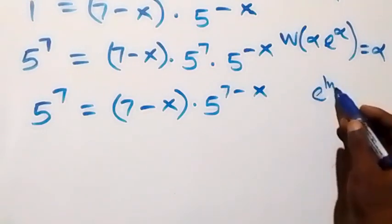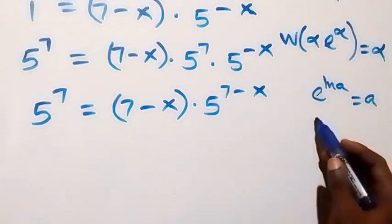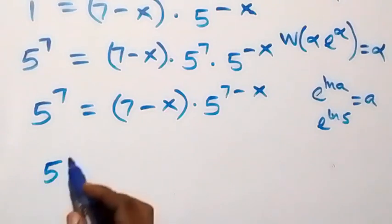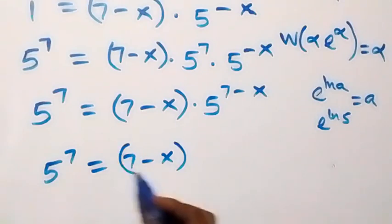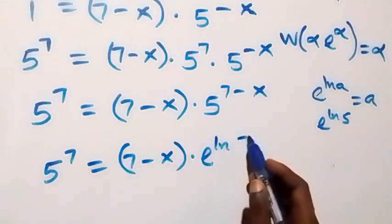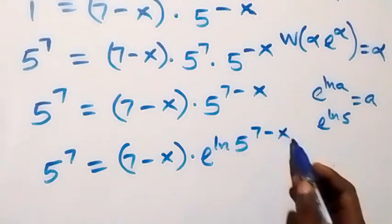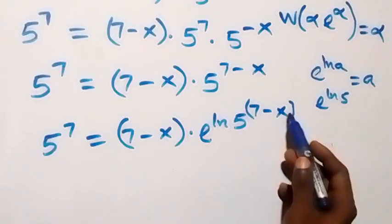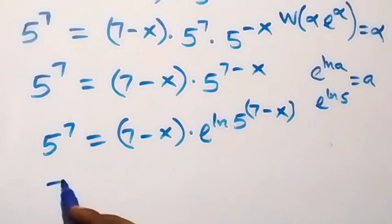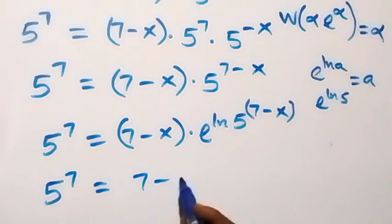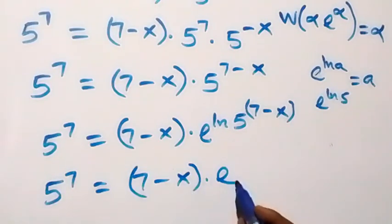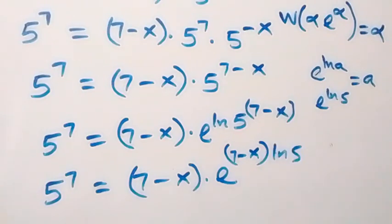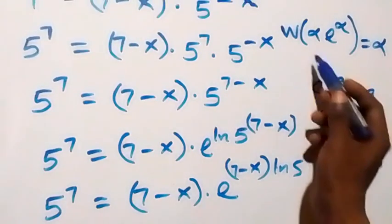From the identity e^(ln a) = a, 5 can be written as e^(ln 5). So 5 raised to power 7 equals 7 minus x, times e^(ln 5) raised to power (7 minus x). Applying the power law of logarithms, we take the power to the back, giving 5 raised to power 7 equals 7 minus x times e^((7 minus x) · ln 5).